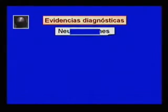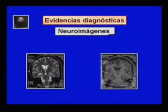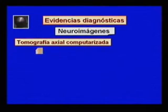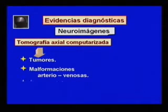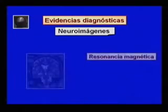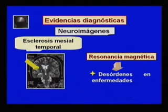La neuroimagen por tomografía axial computarizada y resonancia magnética es de gran utilidad en la búsqueda de lesiones estáticas o evolutivas causantes de epilepsia. Con la tomografía axial computarizada se pueden identificar tumores, malformaciones arteriovenosas, áreas de infarto y focos hemorrágicos. La resonancia magnética es más sensible y ha permitido detectar desórdenes en las enfermedades degenerativas.